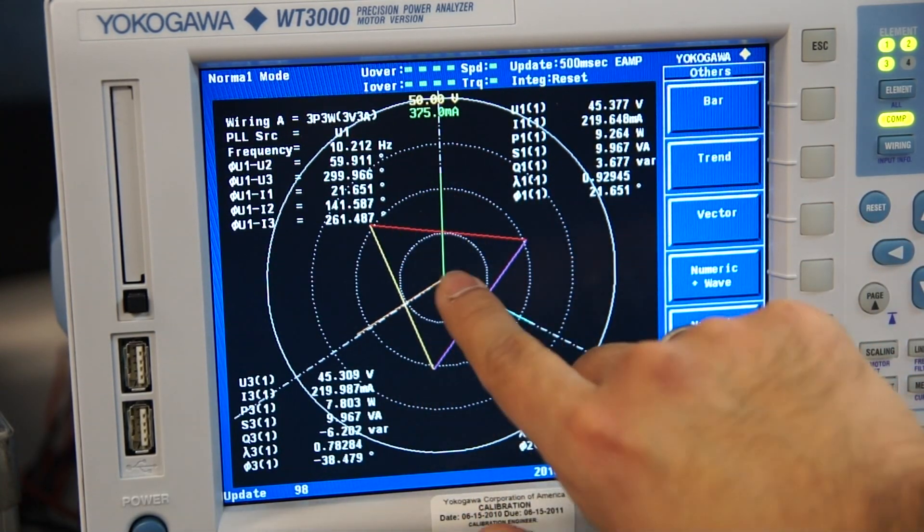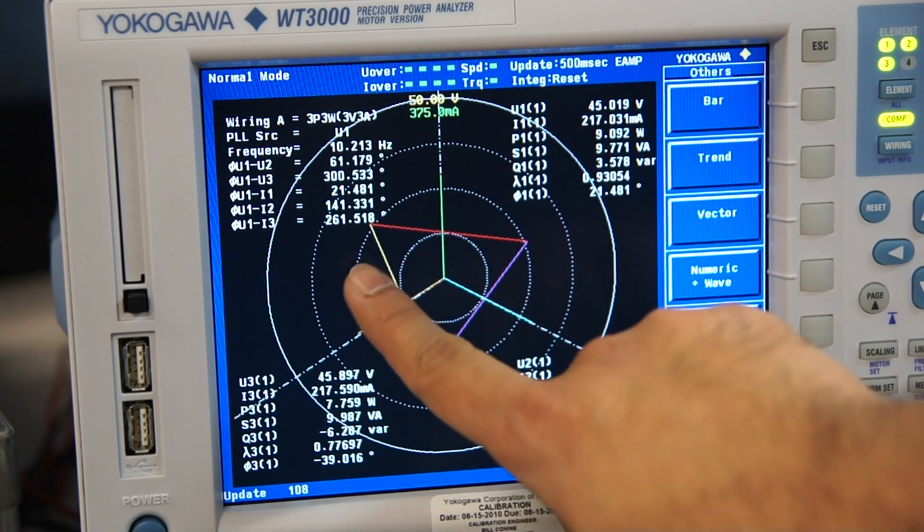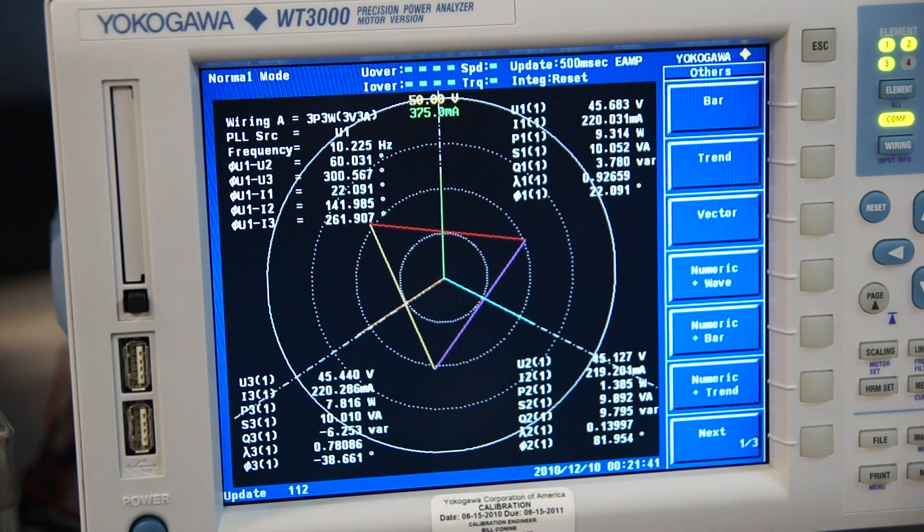And here are your three-phase currents. So this tells you that your wiring is correct, and you're now ready to make some good, accurate power measurements.